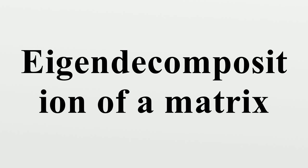Matrix inverse via eigendecomposition: if matrix A can be eigendecomposed and if none of its eigenvalues are zero, then A is non-singular and its inverse is given by Q * lambda^{-1} * Q^{-1}. Furthermore, because lambda is a diagonal matrix, its inverse is easy to calculate. Practical implications: when eigendecomposition is used on a matrix of measured real data, the inverse may be less valid when all eigenvalues are used unmodified, because as eigenvalues become relatively small, the contribution to the inversion is large, and those near zero or at the noise of the measurement system could hamper solutions using the inverse.